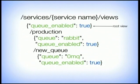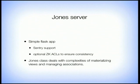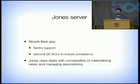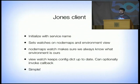The reason config is materialized into a single view is so we only have to do a single read on the client to get the data we need — this dramatically simplifies any client. The server is just a simple Flask app with support for monitoring and security so nobody else can change your values. The client only needs to initialize with a service name, set watches on both the node maps and the environment view — the node maps watch ensures we always know what environment is ours, and the view watch keeps the config up to date.